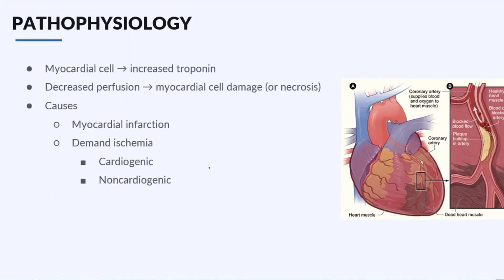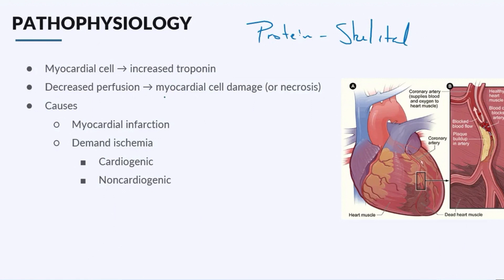In order to get a better understanding of why we look at troponin, let's look at what troponin actually is. Troponin is a protein and it's found in cardiac and skeletal muscle. What happens is when the cell is damaged, troponin is released into the bloodstream and it is therefore detectable. So when you have cardiac cell damage, or myocardial cell necrosis, you're going to have this increase of troponin that floods into the bloodstream.